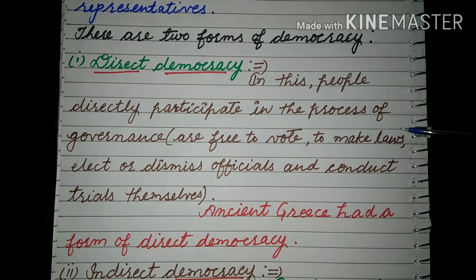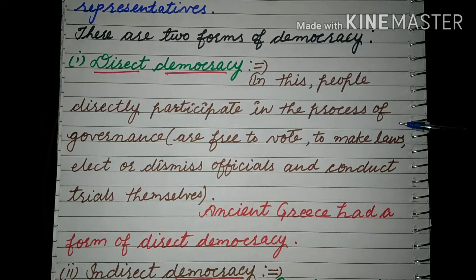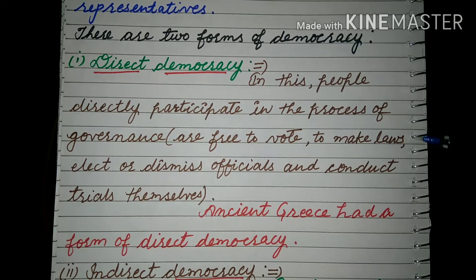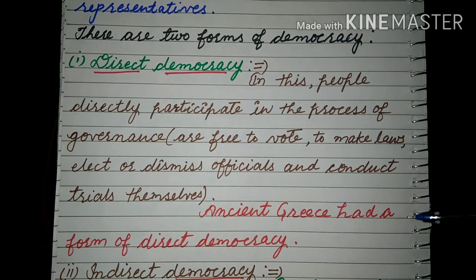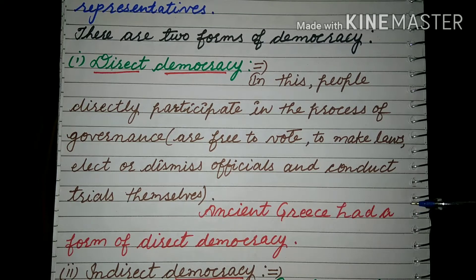In direct democracy, people are free to vote, to make laws, to elect or dismiss officials, and to conduct trials themselves.